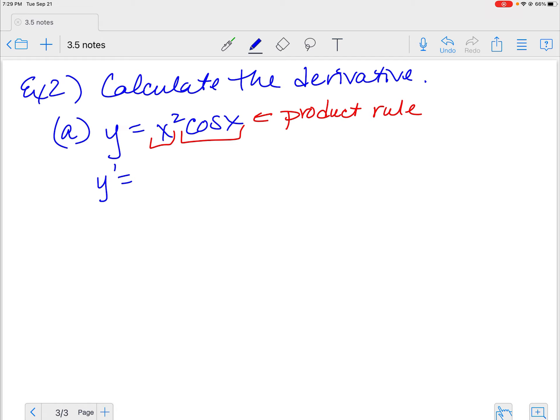So the derivative of the first, because you always take the derivative of the first thing you see. So the derivative of the first is 2x times the second, plus the first times the derivative of the second. Now remember, the derivative of all the cos are negative, so this is negative sine x.